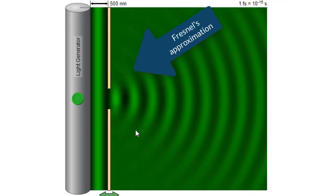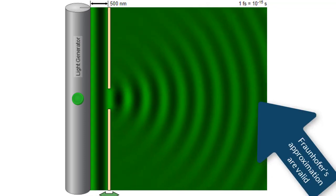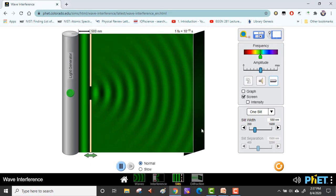Close to the slits we are in what is called the Fresnel's regime whereas some distance away the Fraunhofer's approximations are valid. On the right we can place a screen that will show us the diffraction pattern.